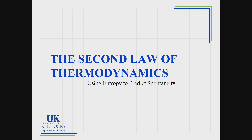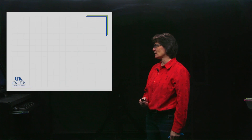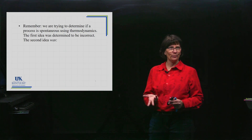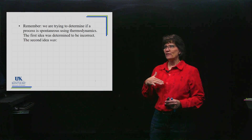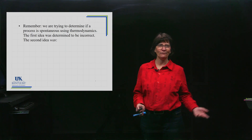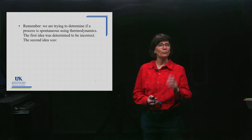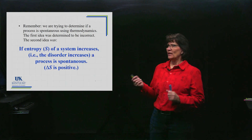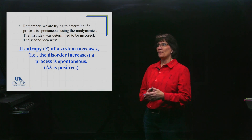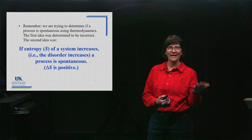We learned about entropy so that we can make a prediction as to whether or not a reaction is spontaneous. The first idea was to use enthalpy — enthalpy was not a good predictor. The second idea was entropy: it seems like everything gets more disordered spontaneously, so the notion was that if a system increases its disorder, the process is spontaneous — meaning if delta S is positive, it should be spontaneous.